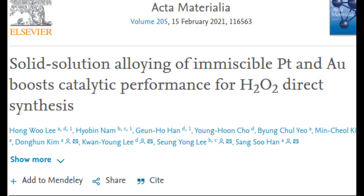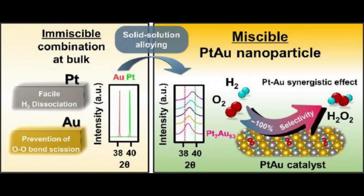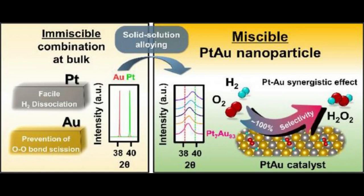The Korea Institute of Science and Technology announced that a joint research team developed a platinum-gold alloy catalyst for hydrogen peroxide production based on a computer simulation. Hydrogen peroxide selectivity can be increased to 95 percent using this catalyst, compared with only 30 to 40 percent for a palladium catalyst, meaning mostly hydrogen peroxide can be produced with a small amount of water.